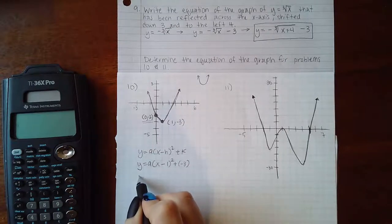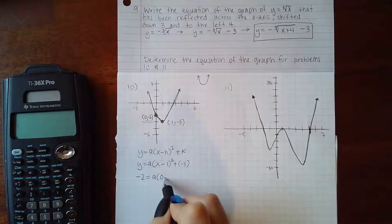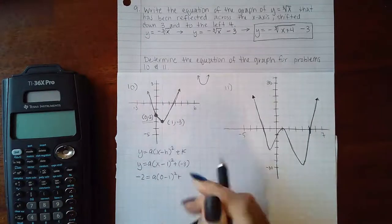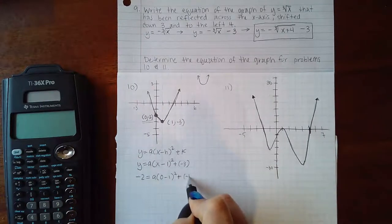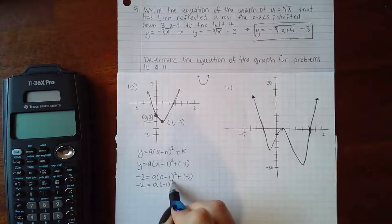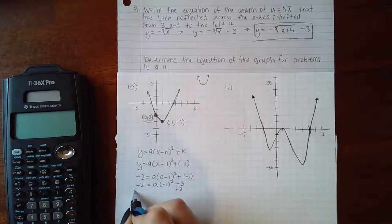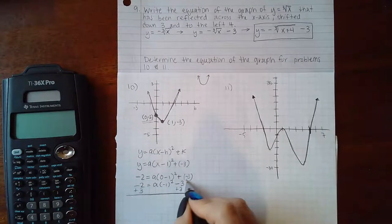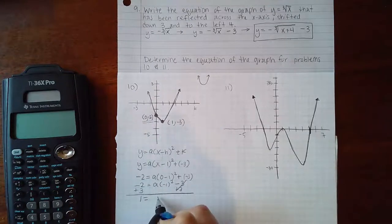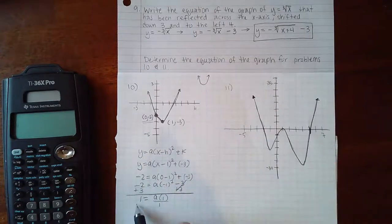We have y is negative 2 and x is 0. We end up with a times negative 1 squared, that's just a minus 3. I'm going to add 3 on both sides to get the term with a alone, so I get 1 equals a. Since negative 1 squared is just a positive 1, and if I divide by that factor, I get a equals 1.